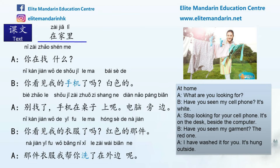Now I will read this conversation one more time. Please listen carefully. 在家里。你在找什么？你看见我的手机了吗？白色的。别找了，手机在桌子上呢。电脑旁边。你看见我的衣服了吗？红色的那件。那件衣服我帮你洗了，在外边呢。